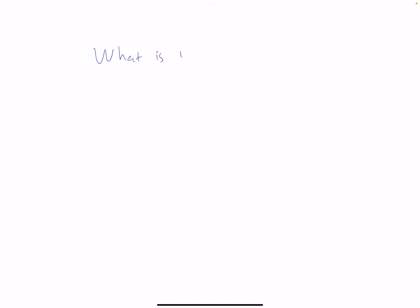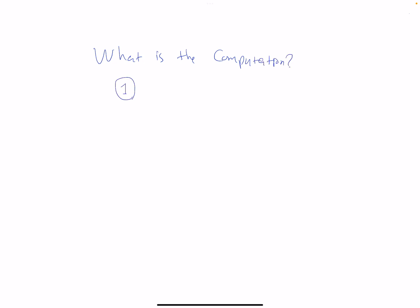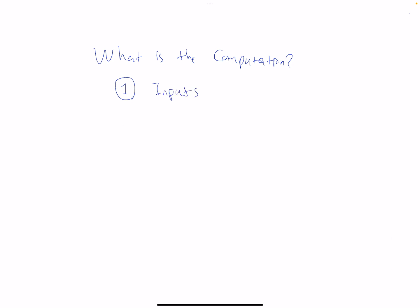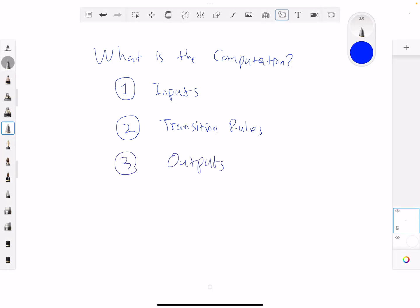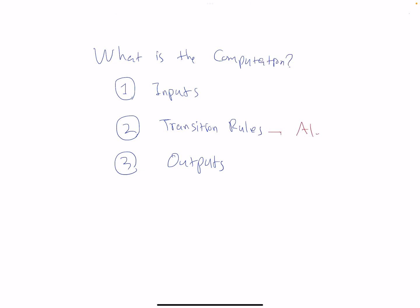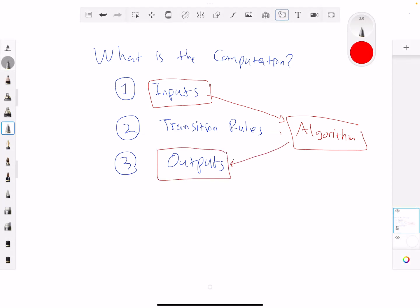The question is: what is a computation? Computation includes three parts — input, transition rules, and outputs. We usually call the transition rules the algorithm. The algorithm takes the inputs and turns them into outputs. We design the algorithm based on our needs to manipulate the inputs and produce outputs, and designing the algorithm is not a trivial task. You need knowledge of data structures and mathematics to design an algorithm to do a specific task.